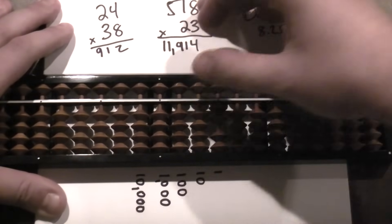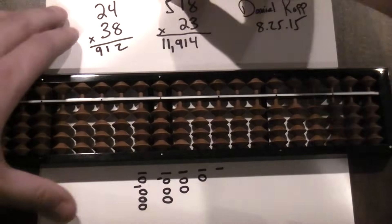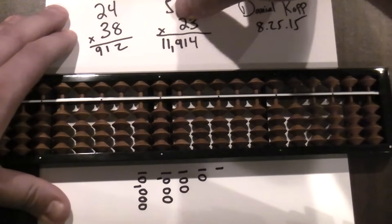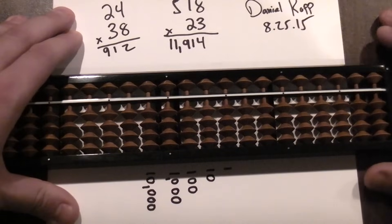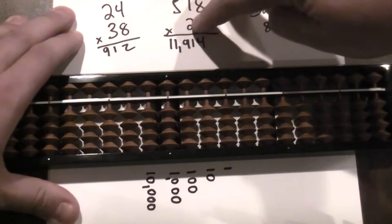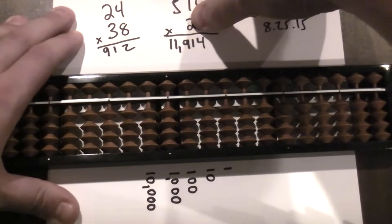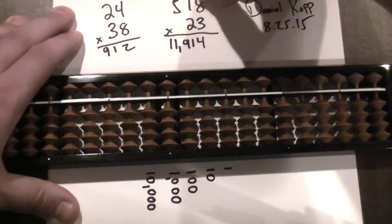Let's do a harder multiplication problem. So to do five hundred and eighteen times twenty-three, we need to know which place we need to start in. So we go one, two, three, four, five. I'm going to start five places over and do my multiplication starting with the two from left to right.